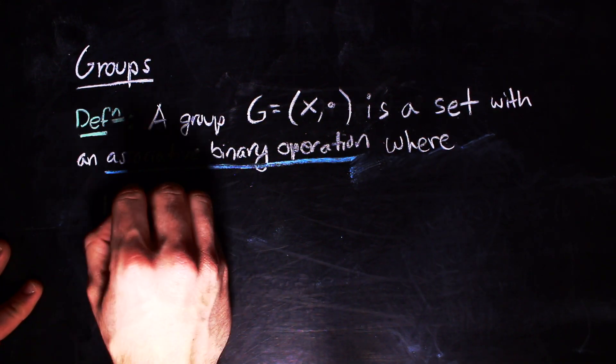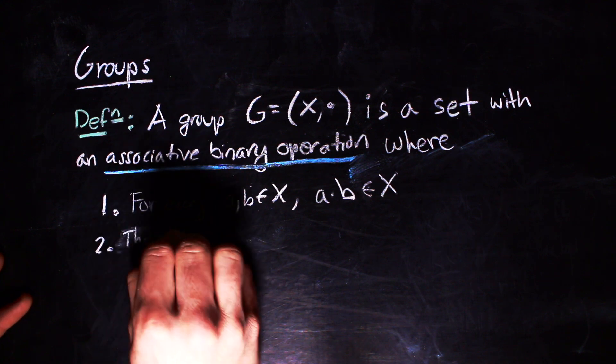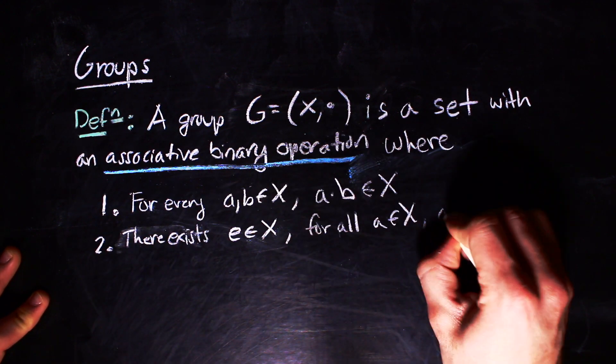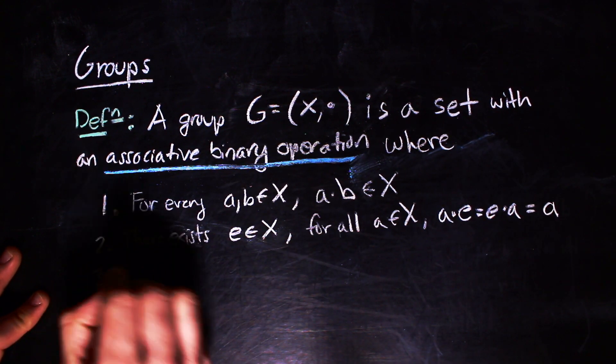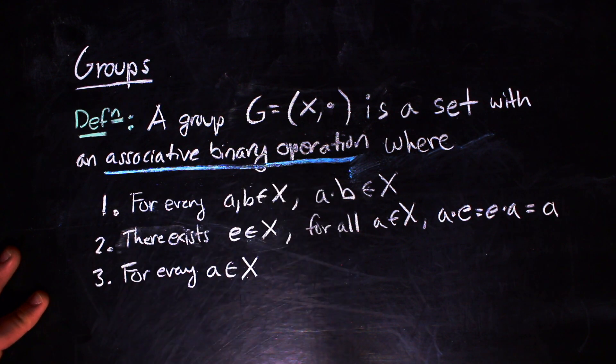For each pair of elements in your group, the composition of those two elements is in your group. There is an identity element, usually denoted by E, and it's the case that E dot A equals A dot E, which is equal to A for any A that you chose from your group.